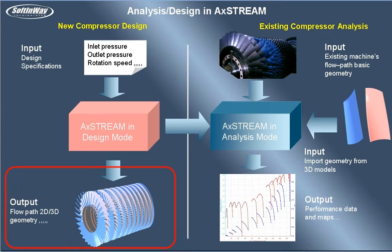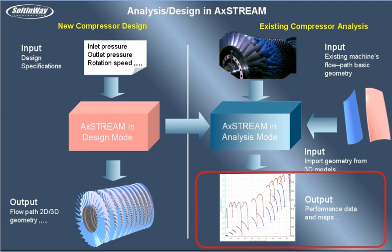In analysis mode, AXE Stream requires the input of basic flow path geometry. Basic geometry includes meridional dimensions and span-wise distribution of cascade principal parameters. The outputs of the analysis mode are performance estimations and different charts. It is necessary to note that analysis is also a part of the design process, used for final tuning and performance estimation.